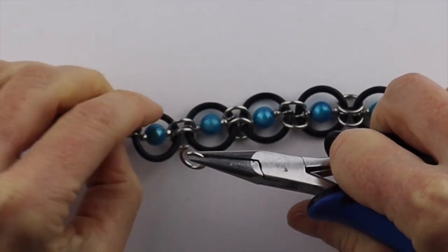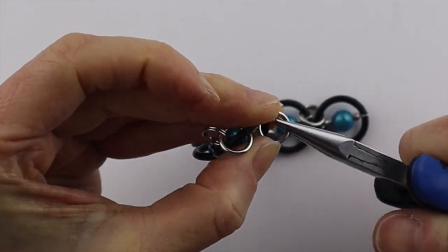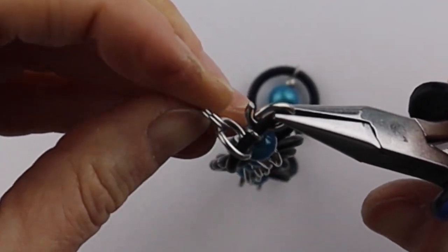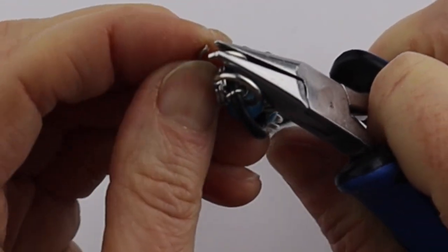Take the other jump ring and stick it to the other side of that wire. Stick it in here and then also put it into the jump ring.